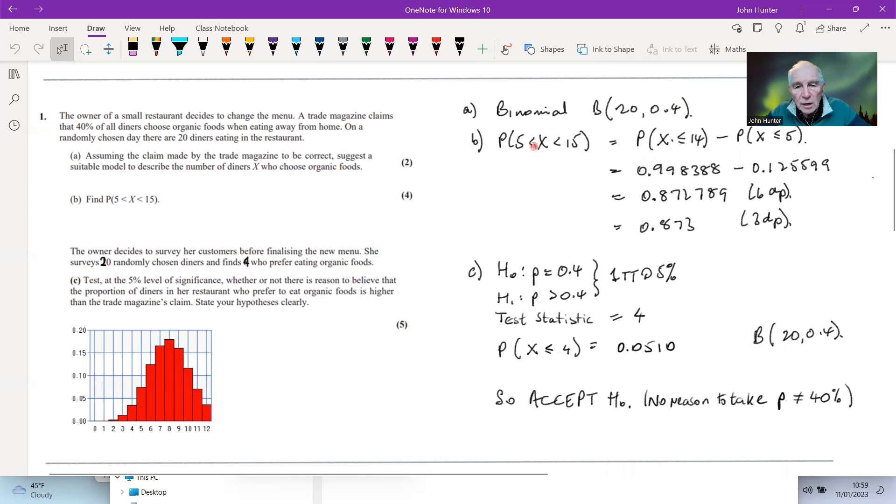So that's your distribution. And if we want to calculate the probability that the number in any group of 20 falls between 5 and 15 exclusively, then we have to convert it to this. Basically, because we are calculating cumulative binomial less than or equal to. So converting to that gives us those numbers, which gives us this answer, 0.873. So that would be the answer to that part.